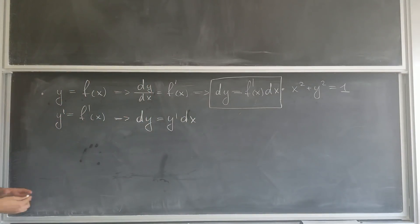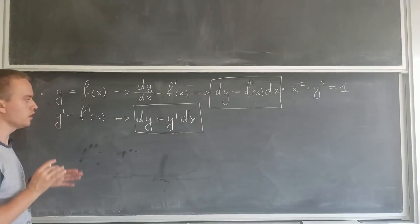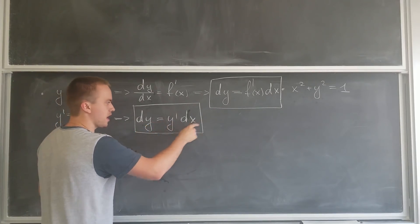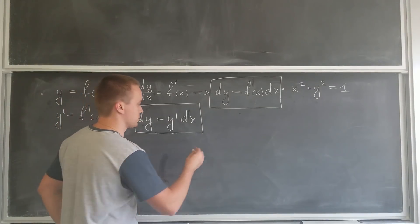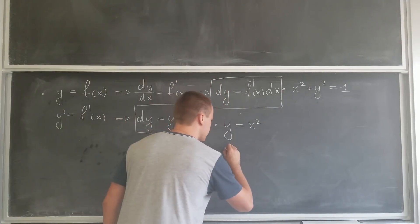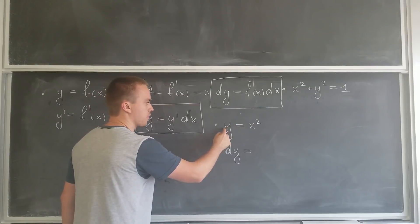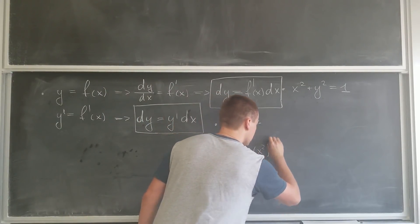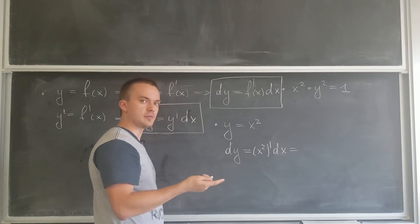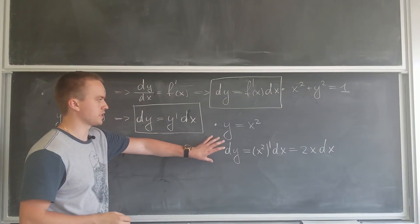We're going to use this formula to apply implicit differentiation. If we can write y as f of x, then dy is just y prime times dx. For example, given y equals x squared and I want to find dy: dy equals y prime times dx, where y prime is x squared prime, which is 2x. So dy equals 2x dx. This is one example of applying this formula.